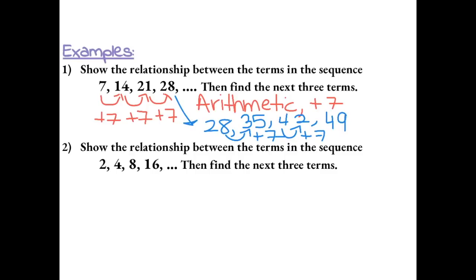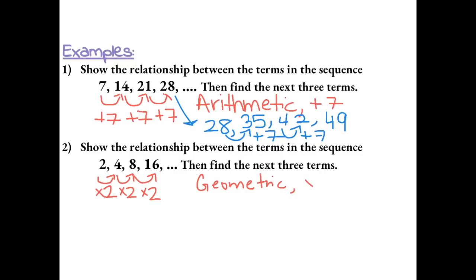Show the relationship between the terms in the sequence 2, 4, 8, 16, then find the next three terms. To get from 2 to 4, 4 to 8, and 8 to 16, they are each times 2. So this is a geometric sequence because it involves multiplication, and you have to multiply by 2 to get to the next term.